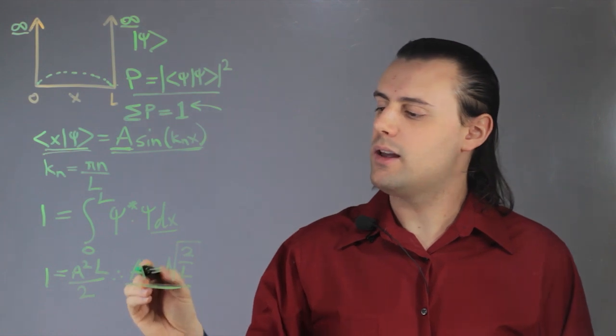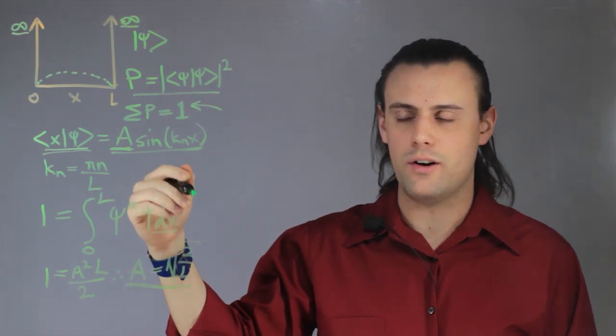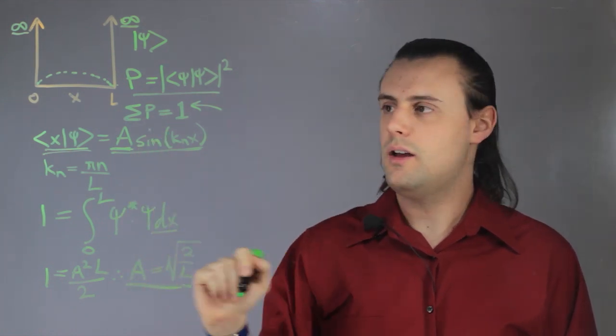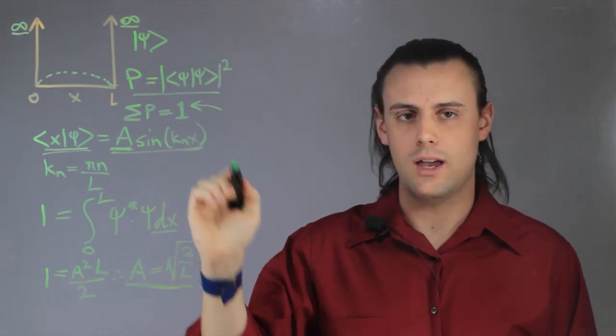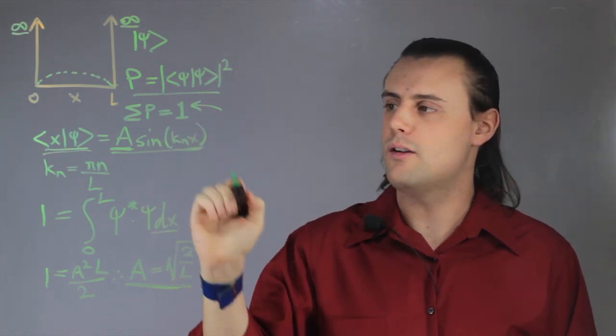And now, when I plug in this value for A, my wave function is now normalized. So when I sum up all the probabilities, I get a total probability equal to one.